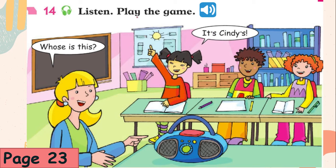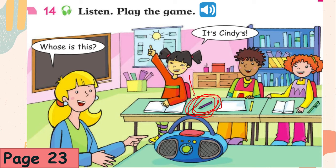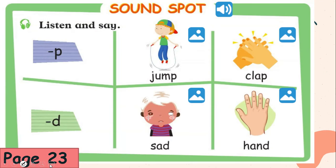Next, page 23 — we're going to listen and play the game. The teacher asks 'Whose is this?' and you answer. For example: 'Whose is this?' — 'It's Cindy's radio.' Or 'It's Lynn's pencil.' Or 'This is Oscar's pencil.' Or 'This is Cindy's book or notebook.' Then sound spot — let's read: P-P, jump, ending sound jump, clap. And letter D, ending sound: sad and hand.